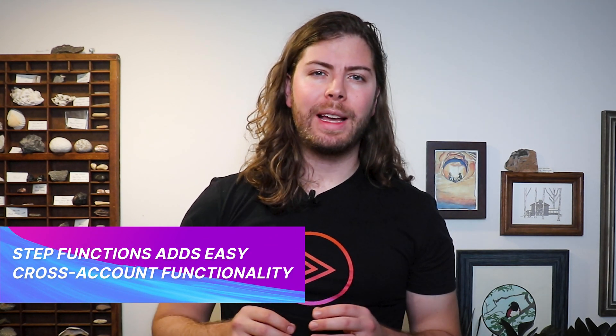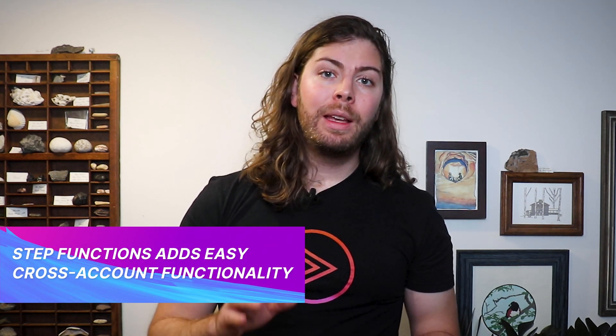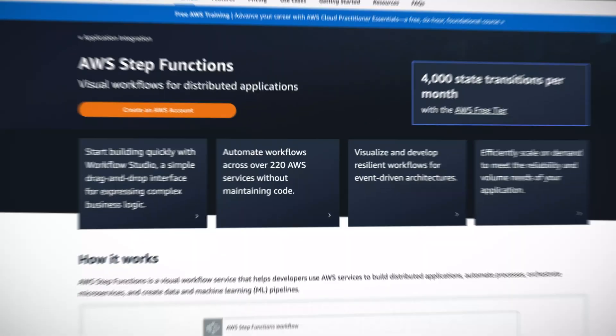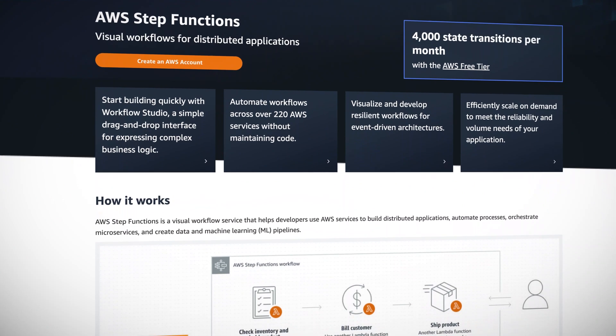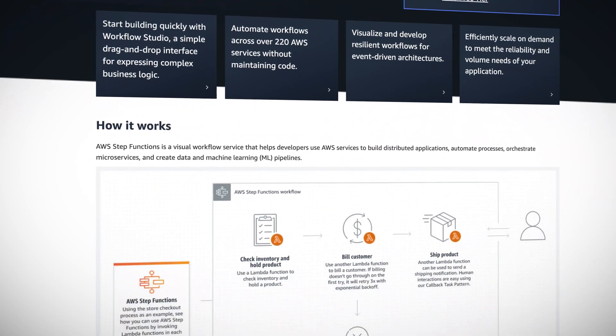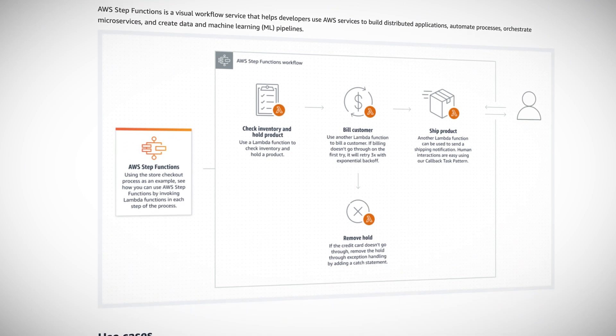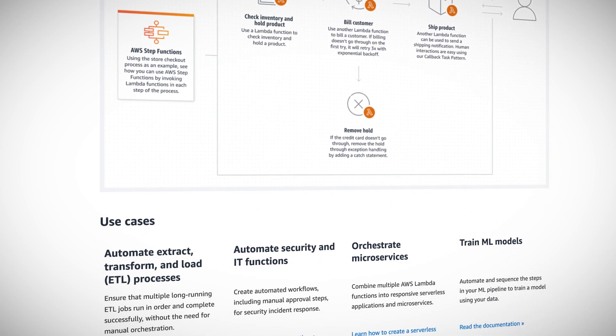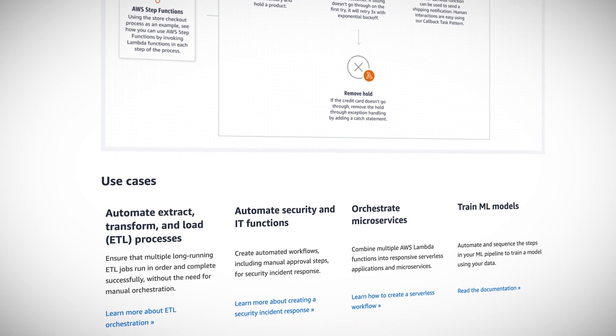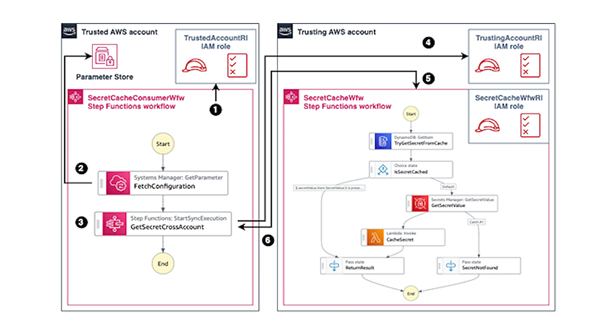Also this week in the serverless world, AWS announced expanded and simplified cross-account functionality with Step Functions. Step Functions are used to orchestrate serverless workflows across many services, and even across many accounts. Historically, users have leveraged resource-based policies to grant Step Functions access to resources in outside accounts. However, not all services supported by Step Functions support resource-based policies. So as of this week, users can now leverage identity-based policies, essentially allowing Step Functions to assume user-like roles in outside accounts.